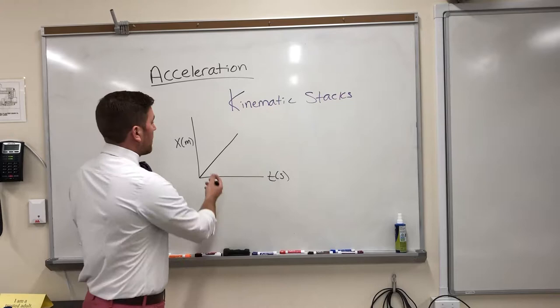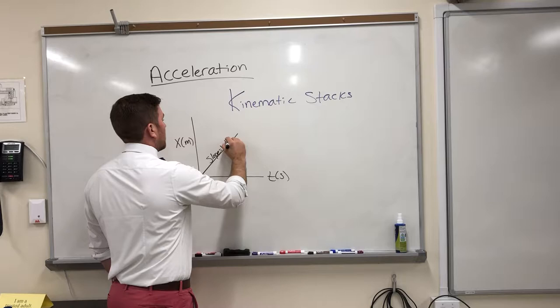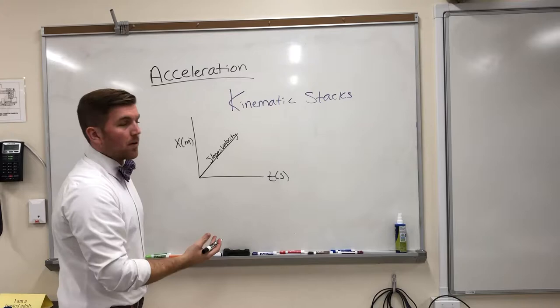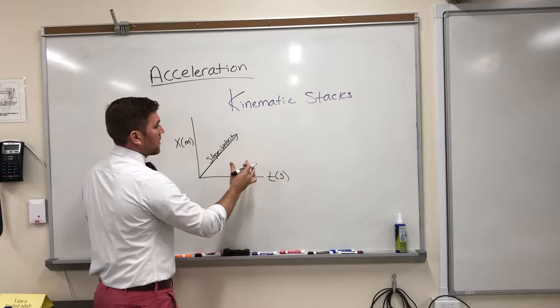As a little review, we know the slope of this line is its velocity. So if I solve for the slope of this, I solve for the velocity of whatever's moving. And this is a pretty consistent velocity. You're going to have one slope for the whole line. It's not changing. It's constant.